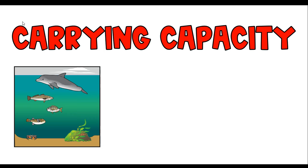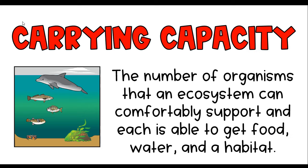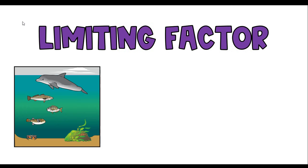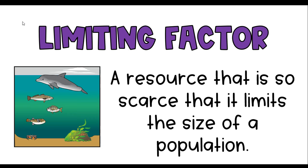Every ecosystem can only support so many organisms. Carrying capacity is the number of organisms an ecosystem can comfortably support where all organisms can still get what they need to survive — food, water, habitat. There are limiting factors that will limit how big a population can grow. For instance, in a pond, the amount of oxygen will run out if there are too many organisms, or there might not be enough minnows for bass to feed on. Limiting factors are a resource so scarce that it limits the size of a population.